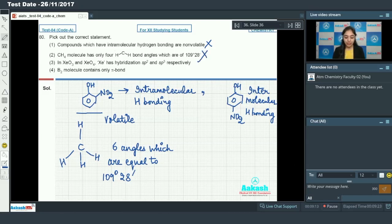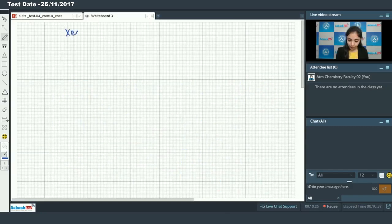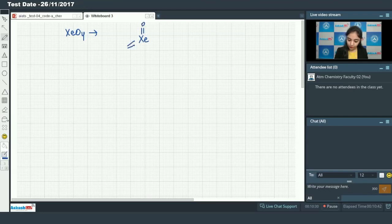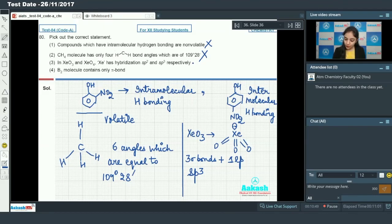Now we have the third option which says that in XeO3 and XeO4, the Xe has hybridization SP2 and SP3 respectively. In the case for XeO3, we have 3 sigma bonds plus 1 lone pair. So the hybridization will be SP3. And if I talk about the XeO4, there are 4 sigma bonds and no lone pair. So the hybridization will be equal to SP3. So in both compounds, the Xe has hybridization SP3. So this is also incorrect.